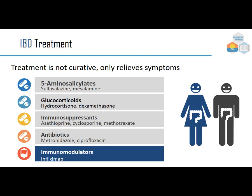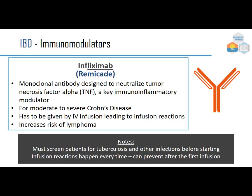Additional treatments include antibiotics like metronidazole or ciprofloxacin, and immunomodulators like infliximab (Remicade). Infliximab is a monoclonal antibody (note the '-mab' ending) that neutralizes tumor necrosis factor-alpha (TNF-α), a key immunoinflammatory mediator, for moderate to severe Crohn's disease. It's given by IV infusion and carries risks of infusion reactions and increased lymphoma risk due to immune suppression. Patients must be screened for tuberculosis and other infections before starting therapy.